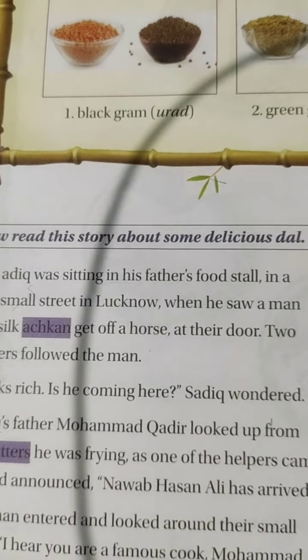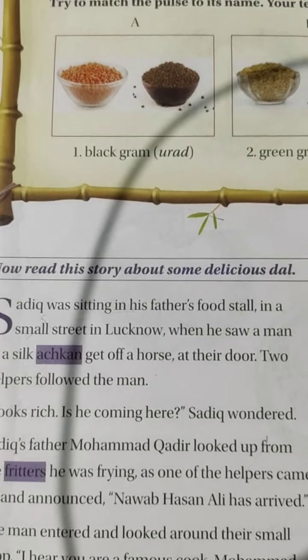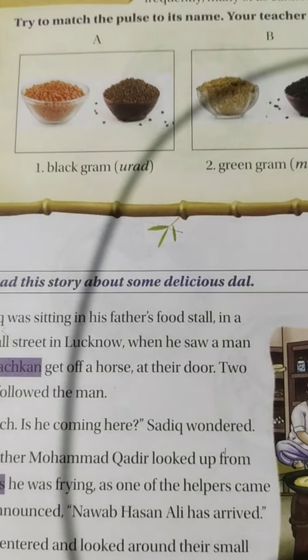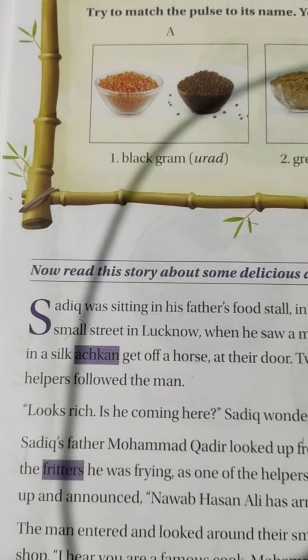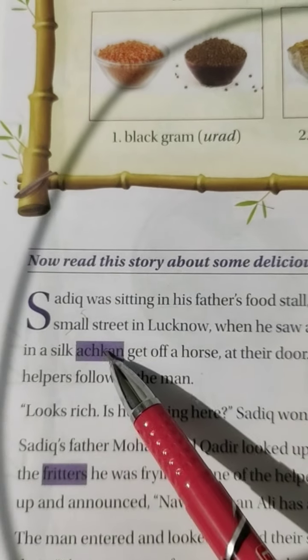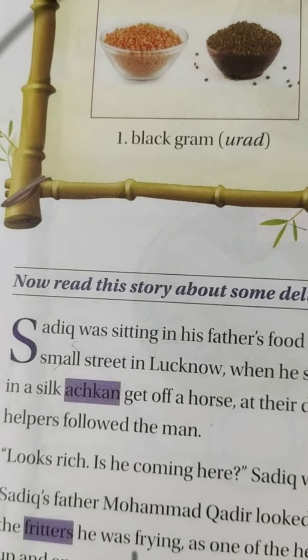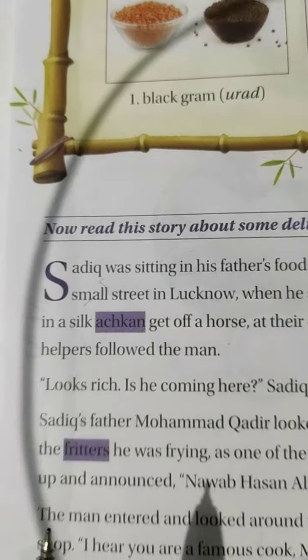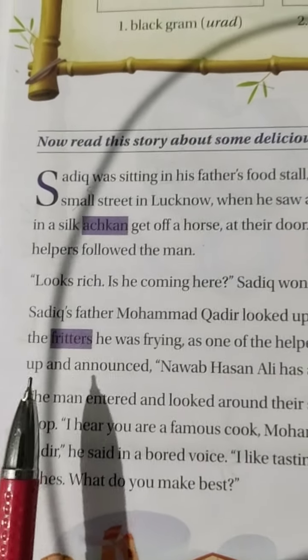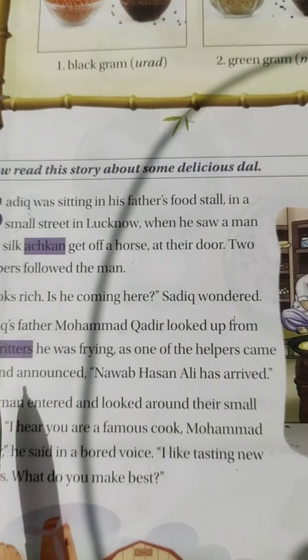Sadiq was sitting in his father's food stall in a small street in Lucknow, when he saw a man in a silk achkan get off a horse at their door. Two helpers followed the man. Children, achkan means a knee-length coat. "Looks rich. Is he coming here?" Sadiq wondered.